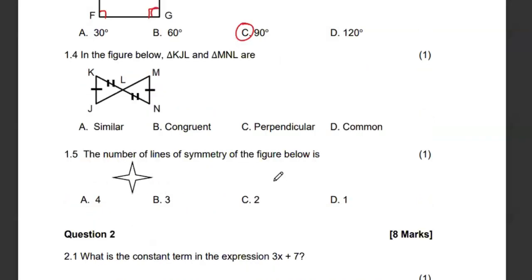Then in the figure below, triangle KJL and MNL are what? What we can see is that they are having the same markings and the same size. So we say that these triangles are congruent. For as long as the triangles are exactly the same, exactly identical in size and angles, then the triangles become congruent.